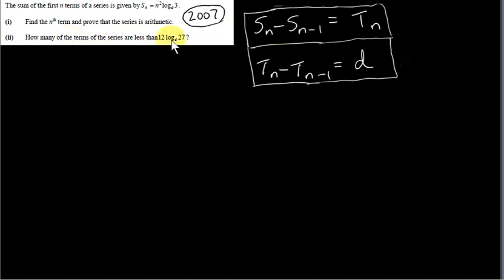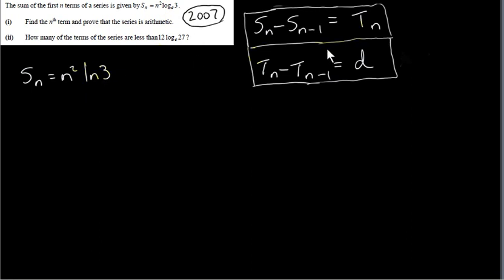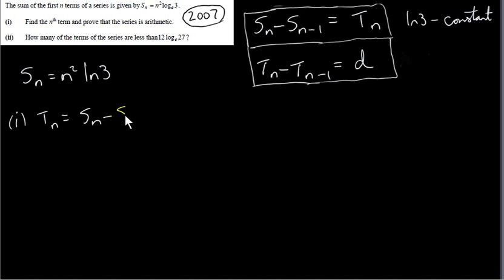Now I'm going to use these two results to answer this question. We're given that the sum of the first n terms of a series is Sₙ = n²·log_e(3), which I'll write as n²·ln3. Note that ln3 is just a constant — a number. We need to find the nth term and prove that the series is arithmetic. To get the nth term we use the result: tₙ = Sₙ − Sₙ₋₁.